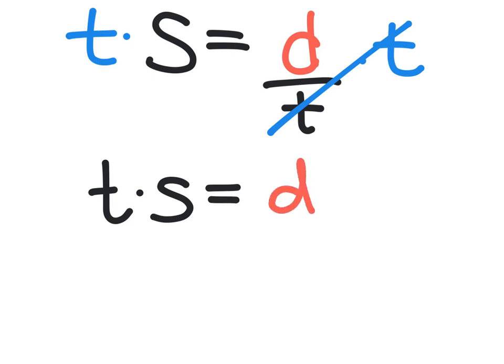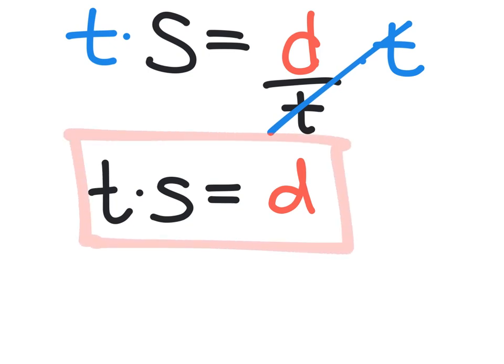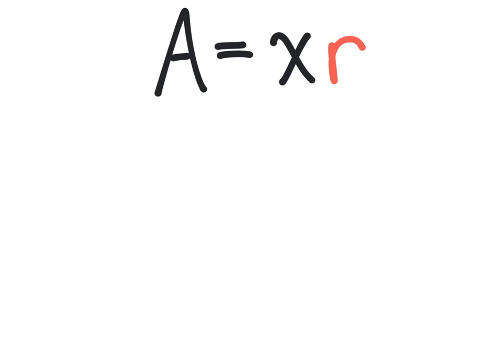Therefore, we have our correct formula. We're going to put a box around it so it's easy to see. For the next example, I'm going to show you two ways to solve it. The equation reads a equals x times r, and we're solving for the variable r in this case.